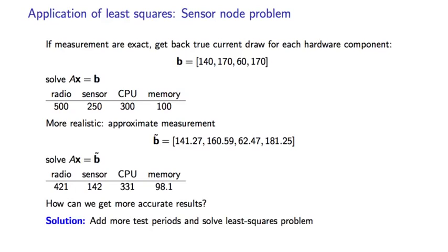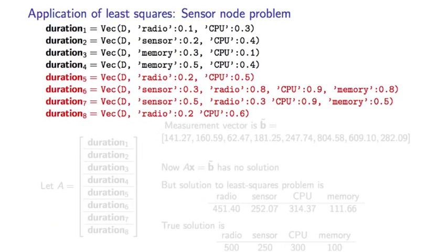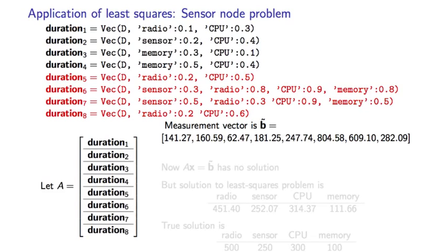We need to collect more data. We add some test periods. Here we've added four test periods and collected the additional data. The measurements are still only approximate. Now, when we form the matrix vector equation Ax equals tilde B, we find it has no solution. Because of the approximation, the constraints conflict with each other.